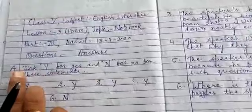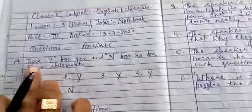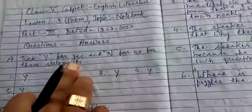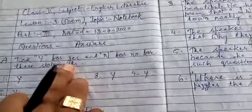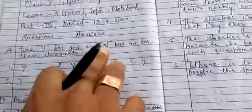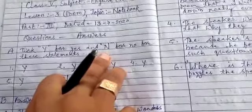Question number A. You have to tick Y for yes. This statement that is correct, for that you have to write Y in front of it and N for no, means which statement is incorrect.